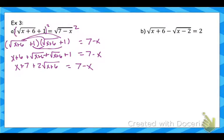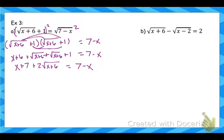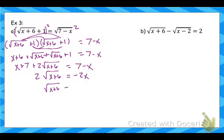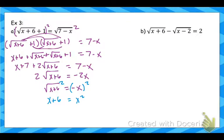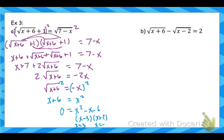Now we have another square root equation. Get the new square root by itself: subtract x and subtract 7, which gives a negative 2x term on the right, then divide both sides by 2. Then square both sides — squaring negative x gives positive x squared. We've got a quadratic again, so set equal to 0 and factor, giving x equals 3 and x equals negative 2.